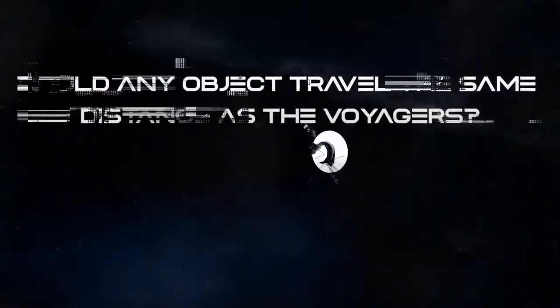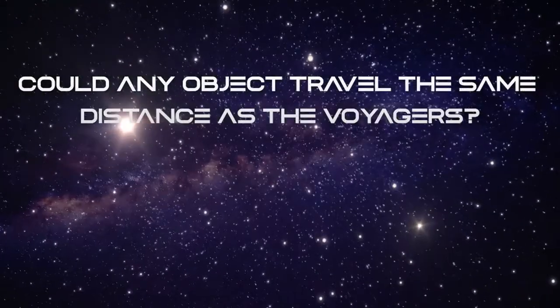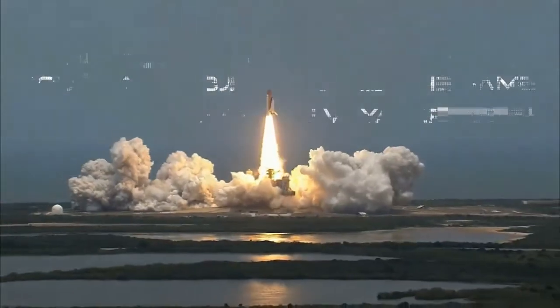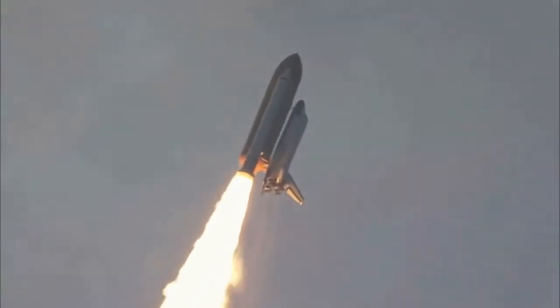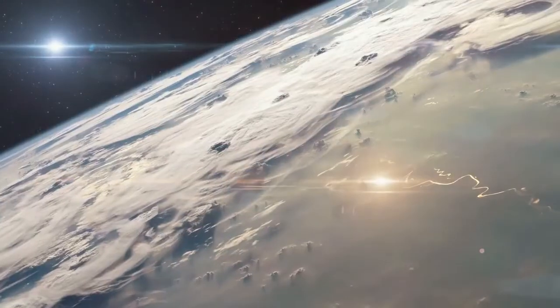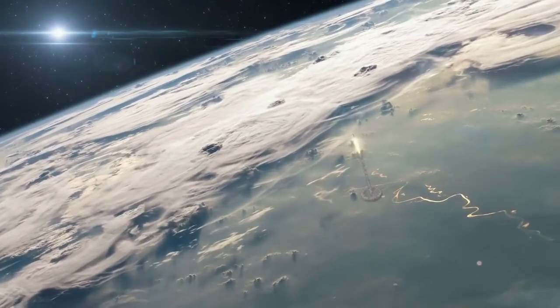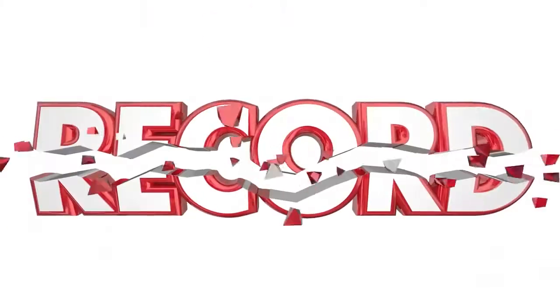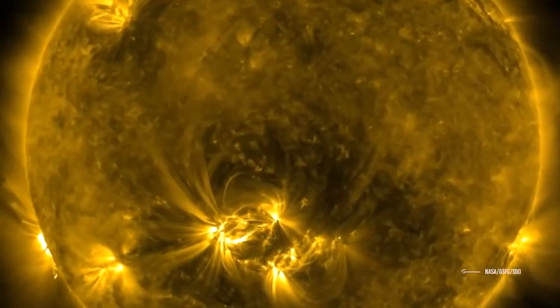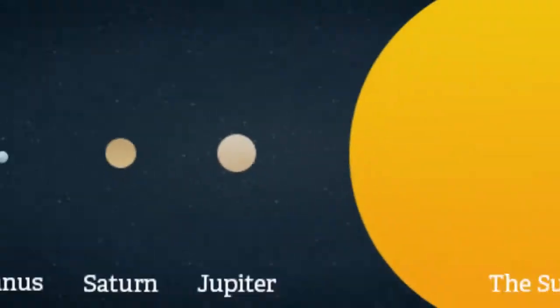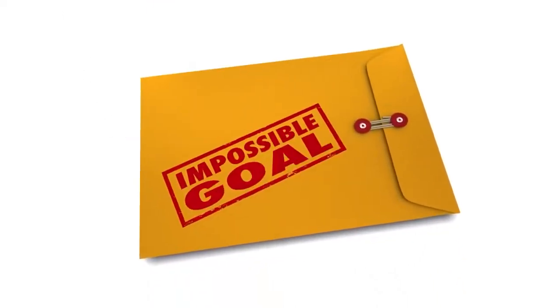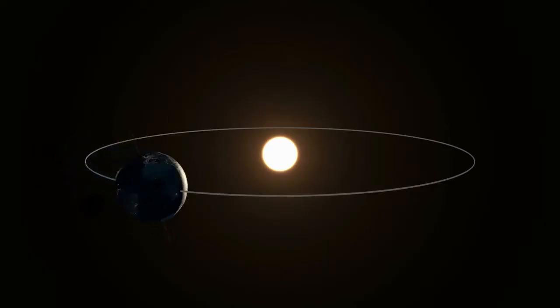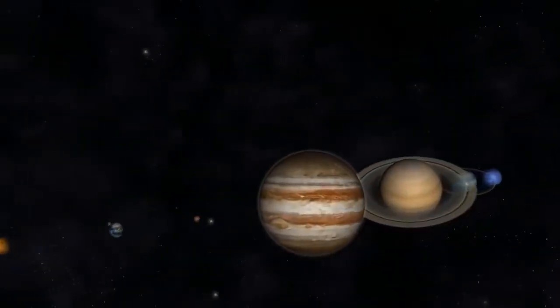Could any object travel the same distance as the Voyagers? Although scenes from space movies making launching a spacecraft into space seems simple, there have only been five spacecraft capable of leaving the gravitational pull of our solar system in all of human history. So you can't just throw a banana into space and expect it to break the record for the farthest object ever to leave the Earth. Because of the enormous massiveness of the Sun, which is 300,000 times larger than the Earth, it is virtually impossible to escape from it without an adequate launch velocity, backed up by gravitational assistance from other planets.